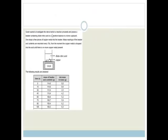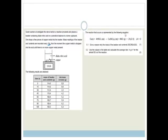So that's our question on organic chemistry. Let's have a look at a different type of question. Sarah wants to investigate the rate at which the reaction proceeds. In a beaker containing dilute nitric acid on a sensitive balance in a fume cupboard, she drops a few pieces of copper metal into the beaker. The mass readings of the beaker and contents are recorded every 15 seconds from the moment the copper metal is dropped into the acid until there's no more copper metal. The reaction is copper plus nitric acid gives copper nitrate plus nitrogen dioxide plus water, and delta H is greater than nought, which means this is an endothermic reaction. Give a reason why the mass of the beaker contents decrease. You can see there is nitrogen dioxide gas given off. The gas is bubbling off and as it bubbles off, it is losing mass.